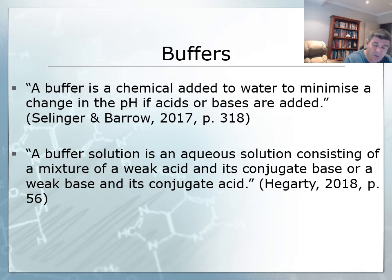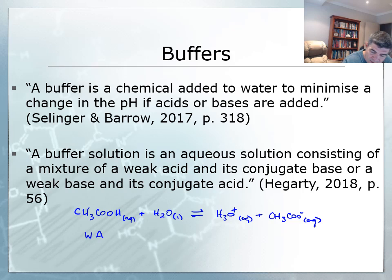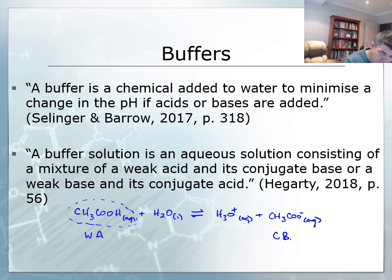If we look at a weak acid and its conjugate — for example, acetic acid — we know that acetic acid in water will act as a Brønsted-Lowry acid and donate a proton to the water, giving us H₃O⁺ and the acetate ion CH₃COO⁻. So here is our weak acid and here is our conjugate base. Because this is a weak acid, there is an equilibrium that lies to the left, favouring retention of the molecule rather than the ion.